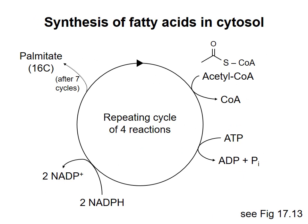The process by which fatty acids are synthesized is similar to the process of beta-oxidation of fatty acids, just in the opposite direction. Two carbon units are added to a growing hydrocarbon chain in a series of four reactions. The process is driven forward by hydrolysis of ATP. Four electrons must be added for every turn of the cycle, and these come from NADPH. The major product of fatty acid synthesis is palmitate, the 16-carbon saturated fatty acid.